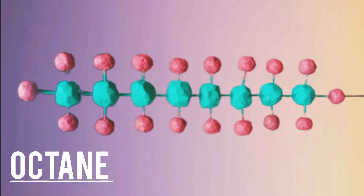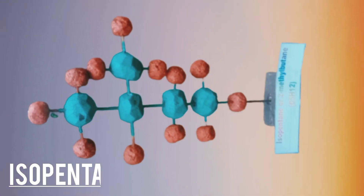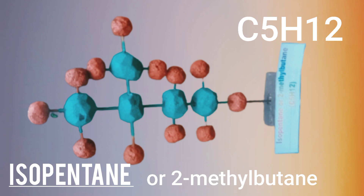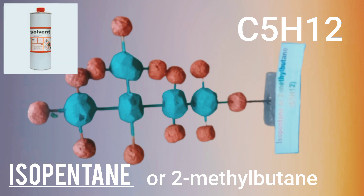Octane is an unbranched alkane with eight carbon atoms and 18 hydrogen atoms. Its chemical formula is C8H18. Octane is an important component in gasoline. Isopentane is a branched alkane having five carbon atoms and 12 hydrogen atoms, or C5H12. It is also called 2-methylbutane because the parent chain — the longest continuous chain of carbon atoms — is four, and a four-carbon chain is butane. '2-methyl' because the alkyl group methyl, or CH3, branches on the second carbon of the parent chain. Isopentane is a colorless liquid with an alcohol or gasoline-like odor, used as a solvent and as a blowing agent in making plastics.